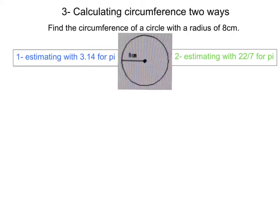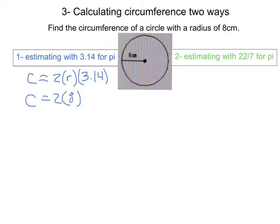On the left side, we are using circumference equals 2 times the radius times pi, which is 3.14. In our problem, we want to find the circumference of a circle with a radius of 8 centimeters. So we plug that in and get 2 times 8 times 3.14. After multiplying that out, we see that the circumference of the circle is approximately 50.24 centimeters.